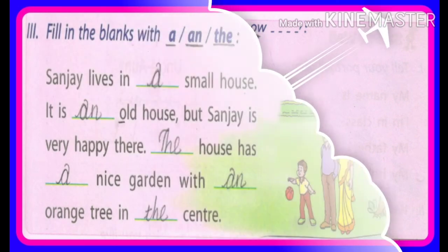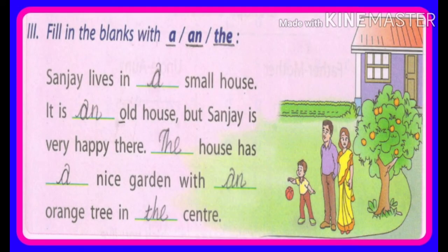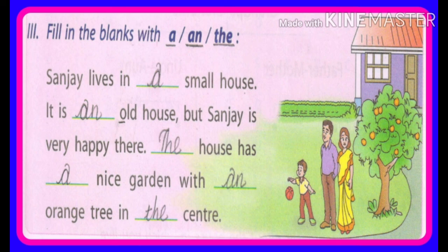Fill in the blanks with A and An. हमें यहाँ पर A और An को जहाँ खाली जगह है वहाँ लिखना है. Sanjay lives in a small house. Sanjay एक छोटा घर में रहता है. It is an old house. यहाँ पर An क्यों लगा है? यह जो O vowel है. But Sanjay is very happy there. The house has a nice garden with an orange tree in the center. Garden के बीच में एक orange tree है.